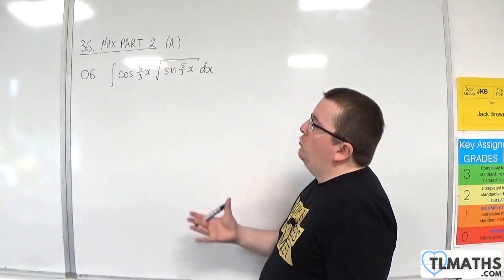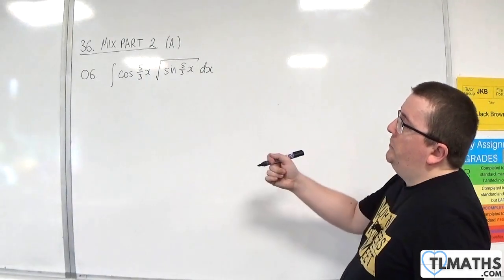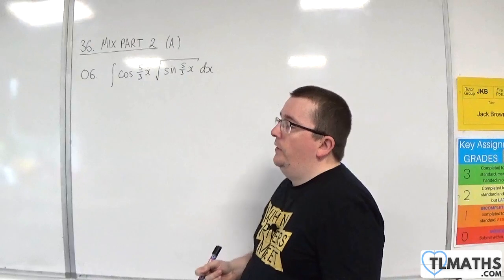This is number 6. We've got the integral of cosine of 5 thirds x times square root of sine of 5 thirds x dx.